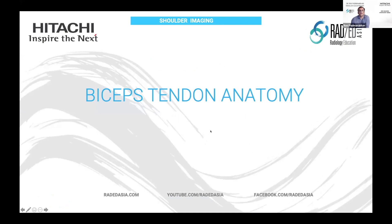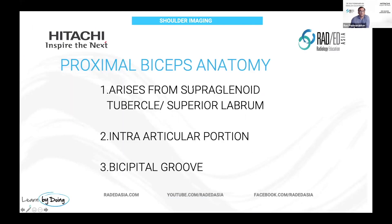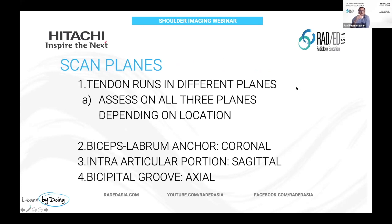Starting with the anatomy: proximally, the long head of the biceps tendon arises from the supraglenoid tubercle and the superior labrum. So at the proximal attachment, it attaches both to bone and to labrum. Then we have the intra-articular portion, and as it becomes extra-articular, it goes into the bicipital groove. We're going to look at these three regions. Because the tendon runs in different planes depending on the region, you need to use a different plane — some planes are better than others.